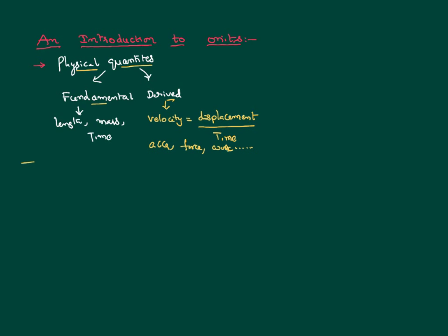To measure these fundamental quantities, we shall have certain units. A unit is simply a way of measuring the physical quantity. If we have to define something as a unit, it shall satisfy certain conditions. It shall be well defined — it shall have a clear meaning and a clear way of defining it, and we shall follow that definition.